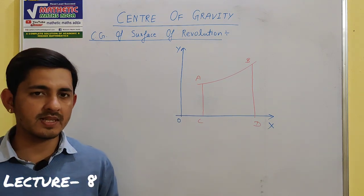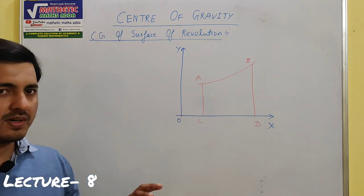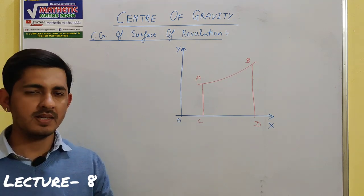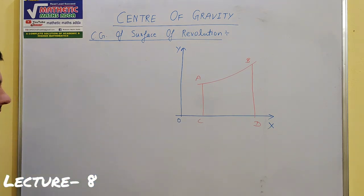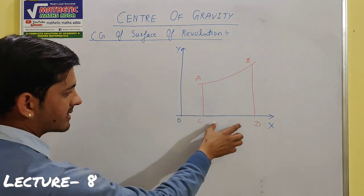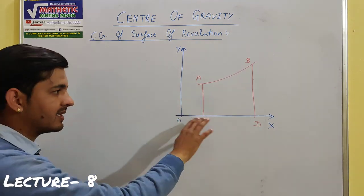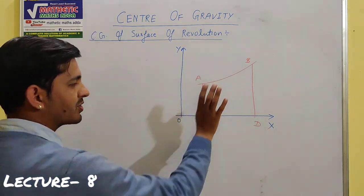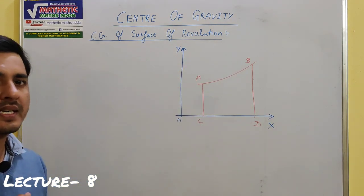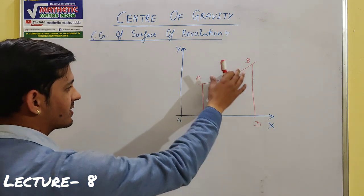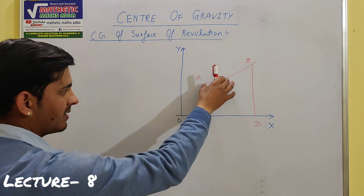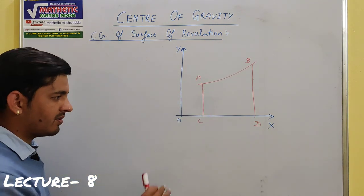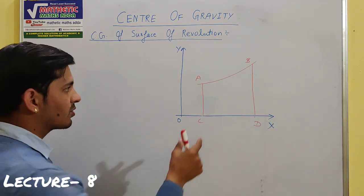आज का जो वीडियो है वो है surface of revolution का। इसका मतलब क्या है — सिर्फ surface की बात करेंगे। पिछले topic में solid था, इसमें यह difference है कि यह hollow होगा, सिर्फ surface की बात करेंगे। Symmetrical body जो होती है, जिस axis के about वो body revolve होकर बन रही है, उसको हमने axis बोला था।